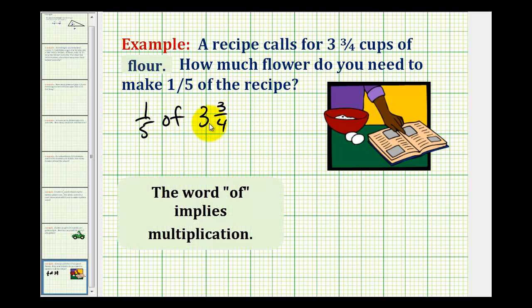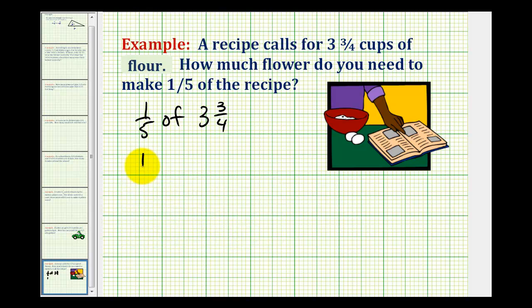So if we want one-fifth of three and three-fourths, we need to multiply one-fifth and three and three-fourths. So we're going to have one-fifth times three and three-fourths.